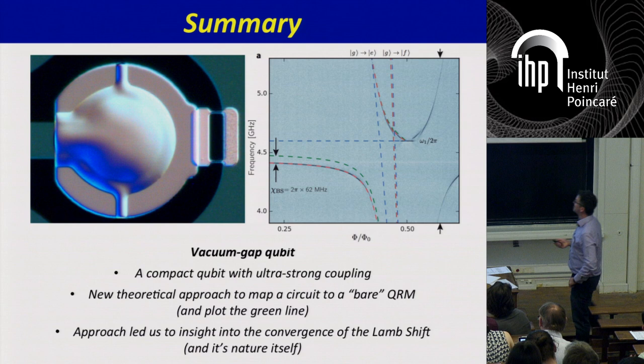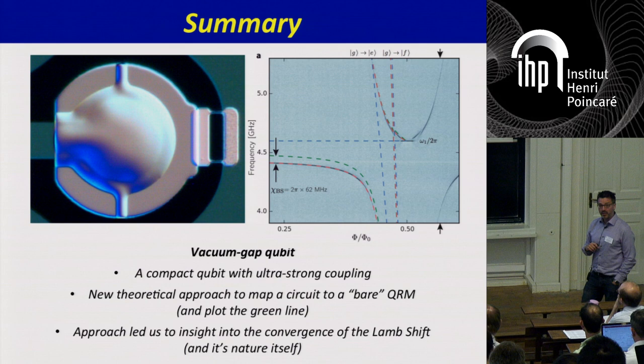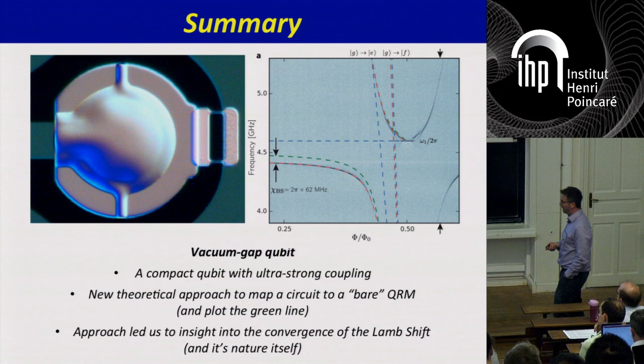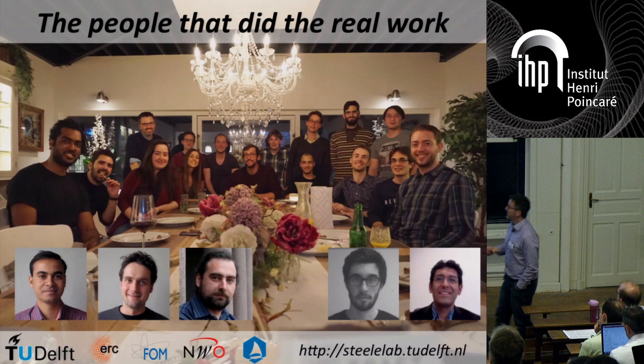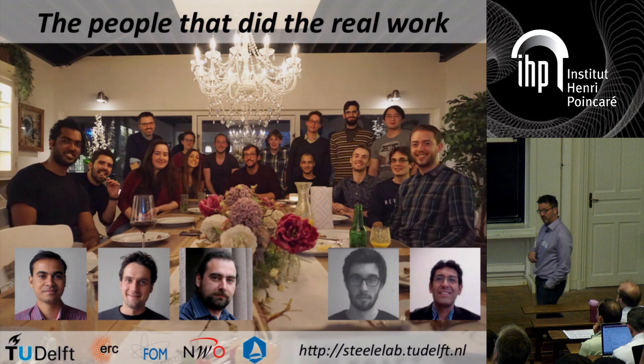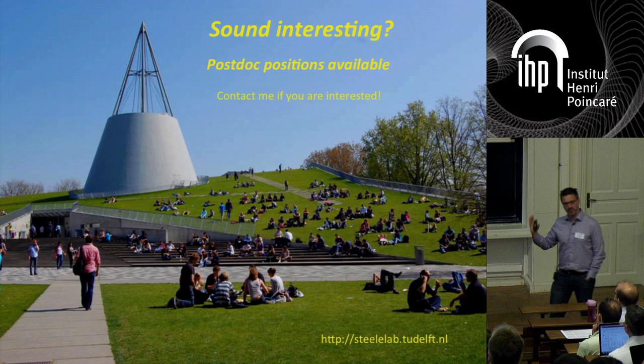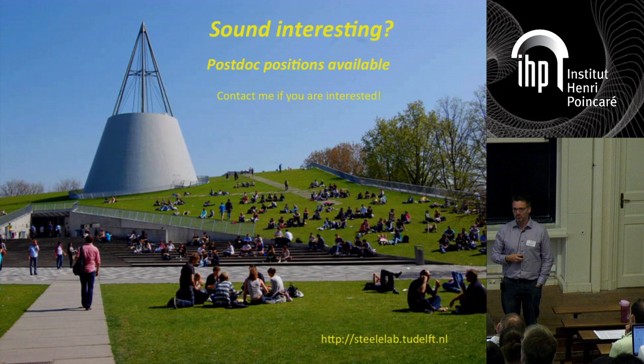To summarize: I've told you about this vacuum gap qubit — a compact qubit with ultra-strong coupling — which led us to an interesting way of thinking about ultra-strong coupling limits, the Lamb shift problem, and the nature of how quantum the Lamb shift actually is. I'd like to thank the people who did the real work — this is a recent picture of the team — as well as theoretical support from Bilbao from the group of Enrique Solano, which was very helpful in understanding our results quantitatively. We also have postdoc positions available.